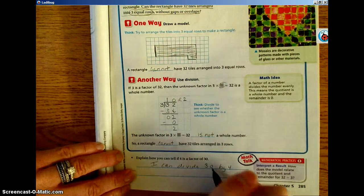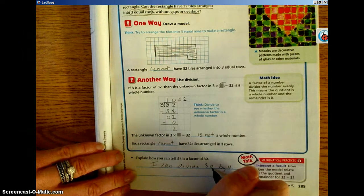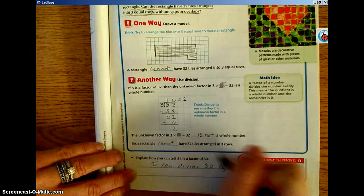I know that 4 is not going to go into 30 equally. This is, division is reverse multiplication. I know that 30 is not a factor of 4.